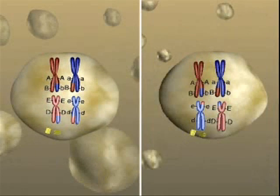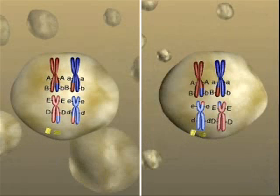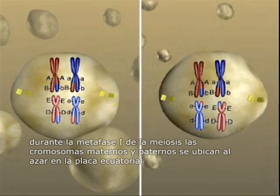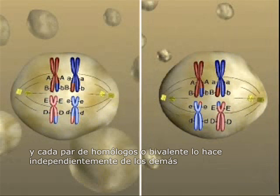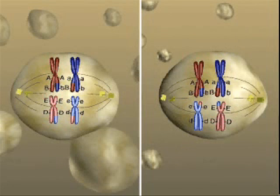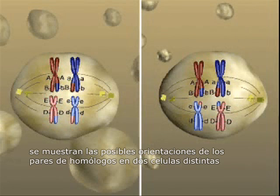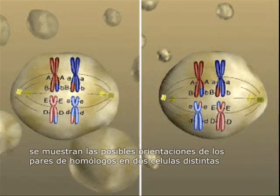During metaphase I of meiosis, the maternal and paternal chromosomes of one homologous pair align independently of the maternal and paternal chromosomes of the other homologous pairs. The orientation of homologs in two different cells undergoing meiosis is shown.